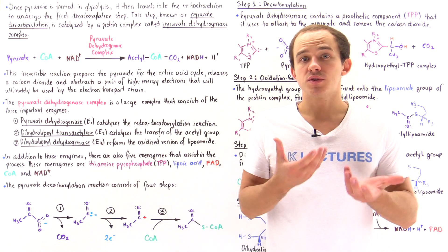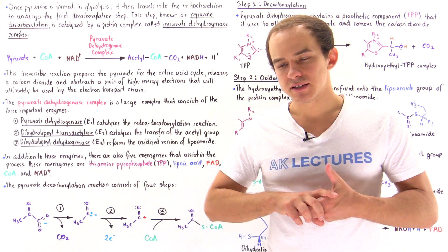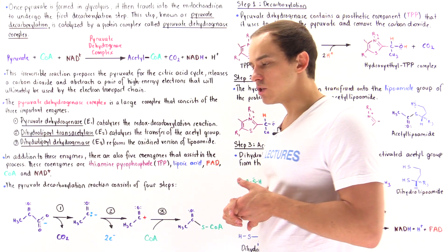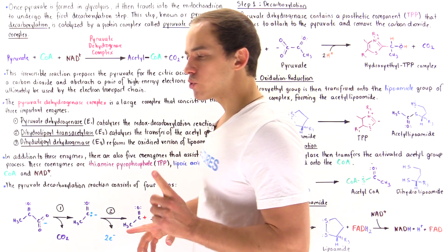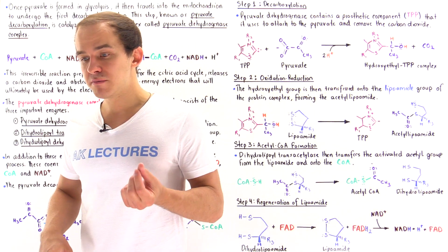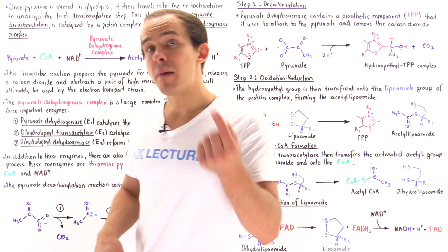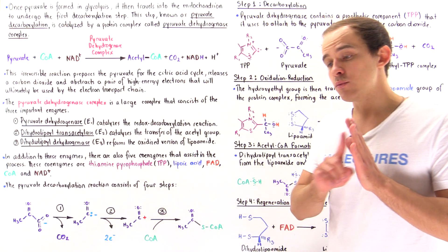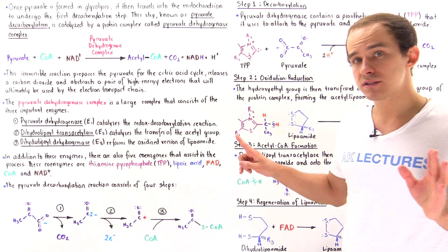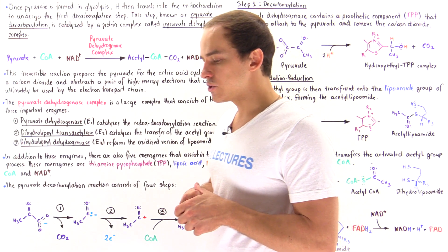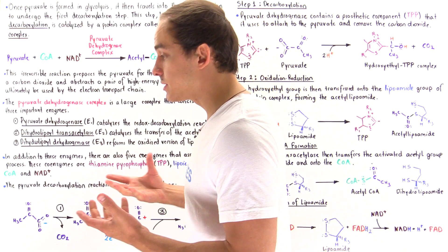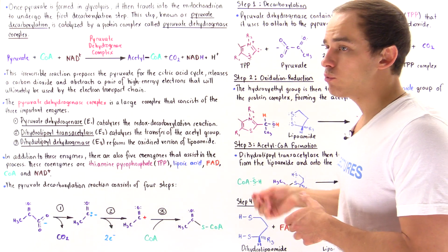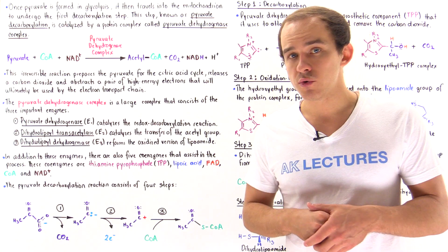Once glucose undergoes glycolysis in the cytoplasm and produces pyruvate molecules, in the presence of oxygen, those pyruvate molecules will migrate into the matrix of the mitochondria. They move across the mitochondrial membranes via a special type of membrane protein called pyruvate translocase.